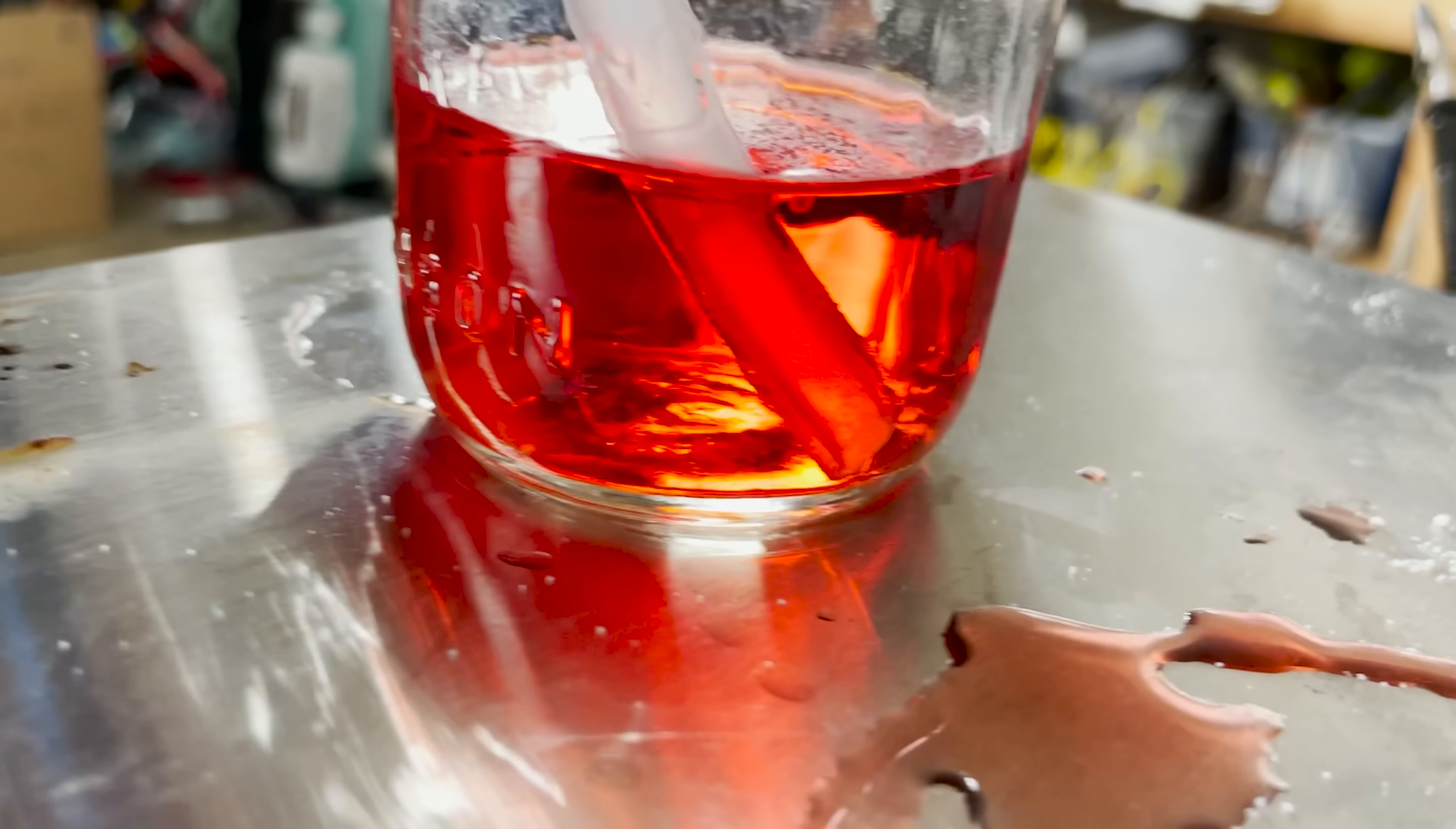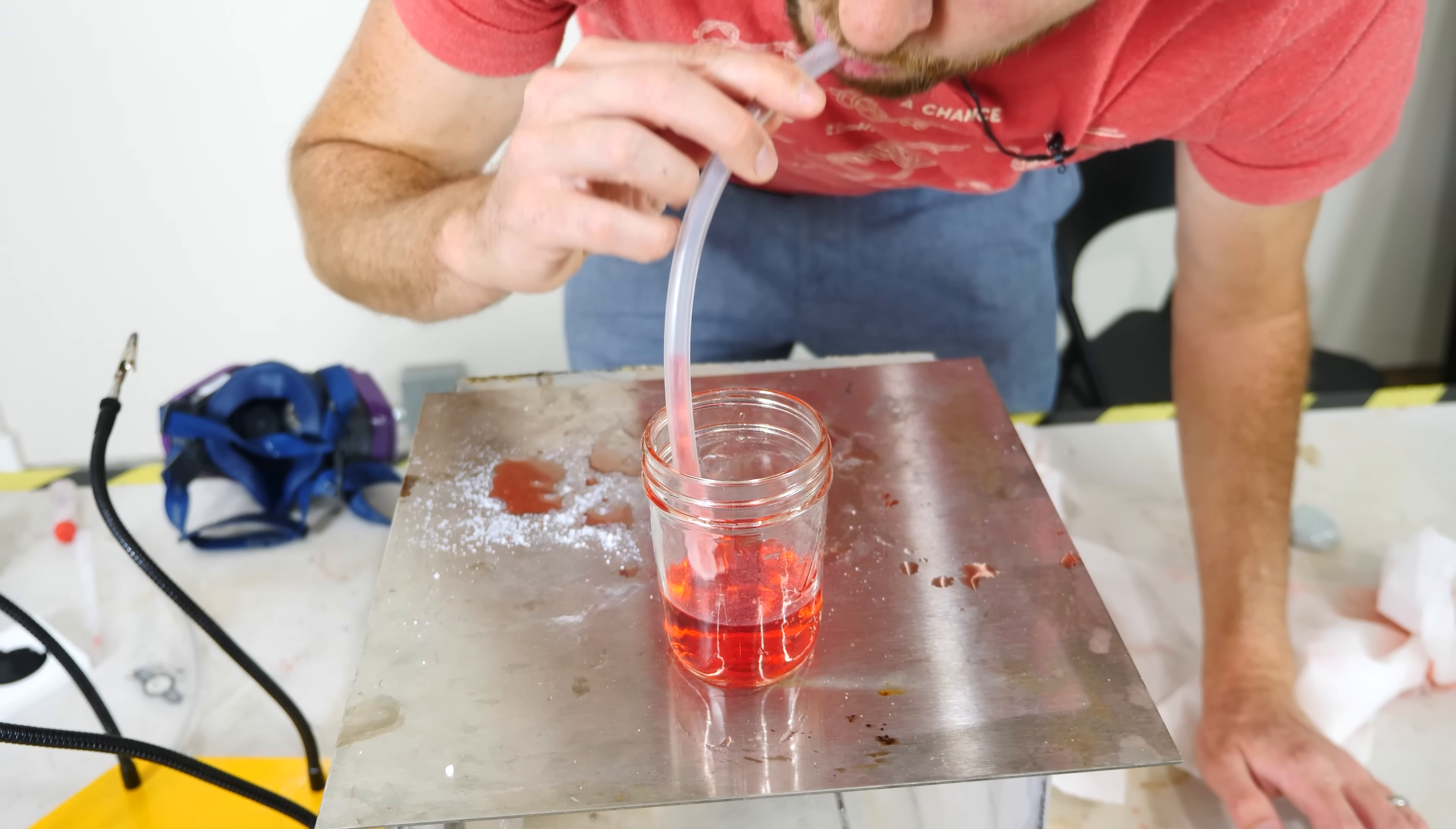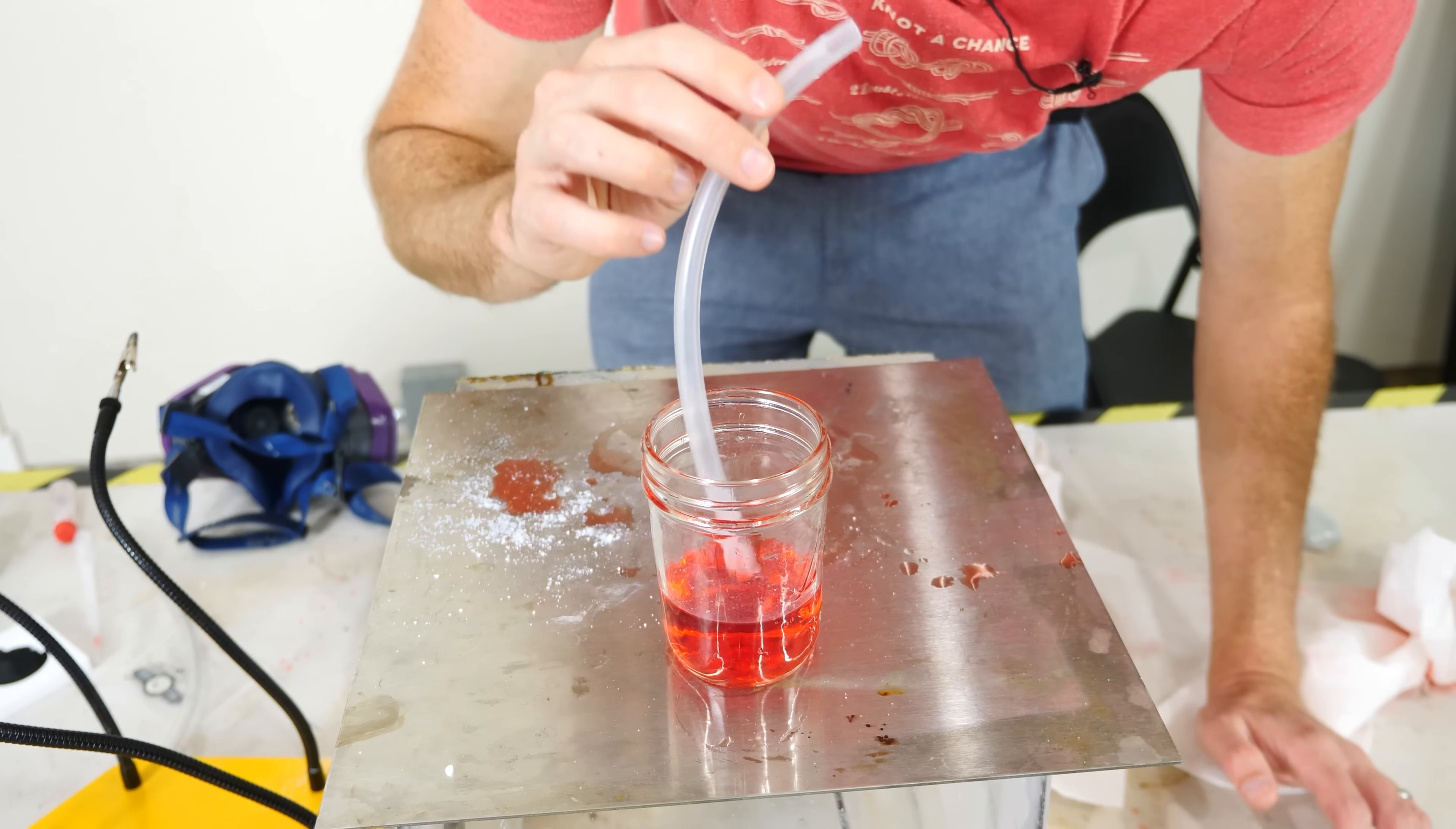So what happens if I try to suck through it now? If I leave the straw submerged I can suck it up just fine. But if while I'm sucking I lift the straw out of the water, the water just falls out of the straw. I can't suck it up.